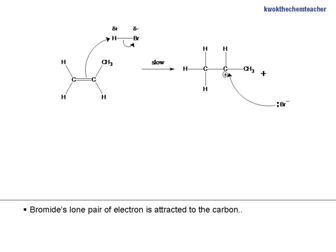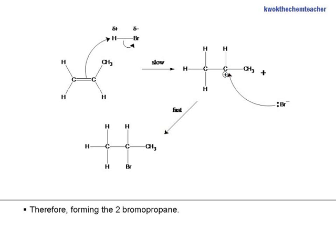Bromide's lone pair of electrons is attracted to the carbon, therefore forming 2-bromopropane.